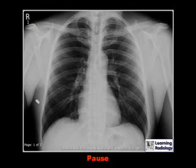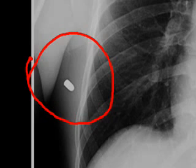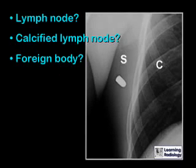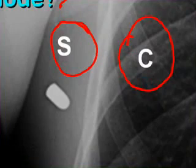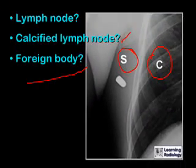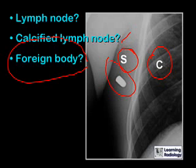Here's a chest x-ray — you can pause to determine where the abnormality is and what you think it might be. You were correct if you identified an abnormal density superimposed on the right axilla. If we examine its density more carefully, we can tell it is not a lymph node, because a lymph node would be the same density as all the other lymph nodes in the axilla. It's actually much denser than soft tissue, and it's not a calcified lymph node because this is denser than calcium in the ribs.